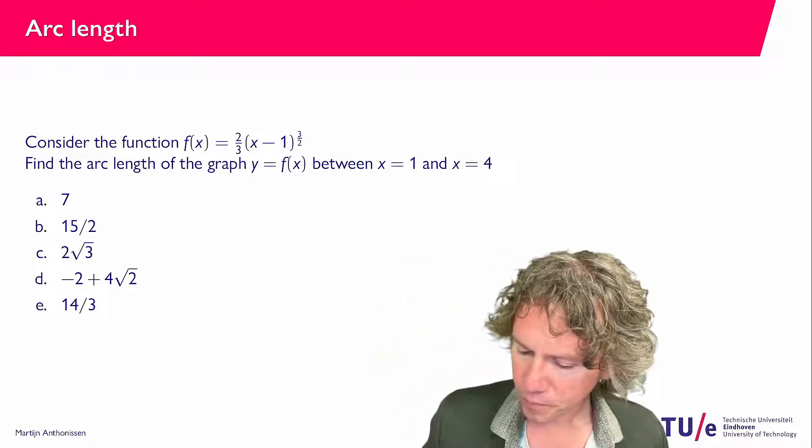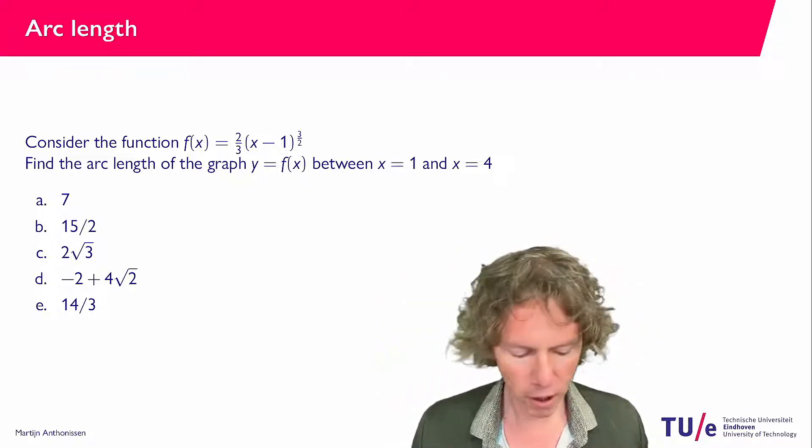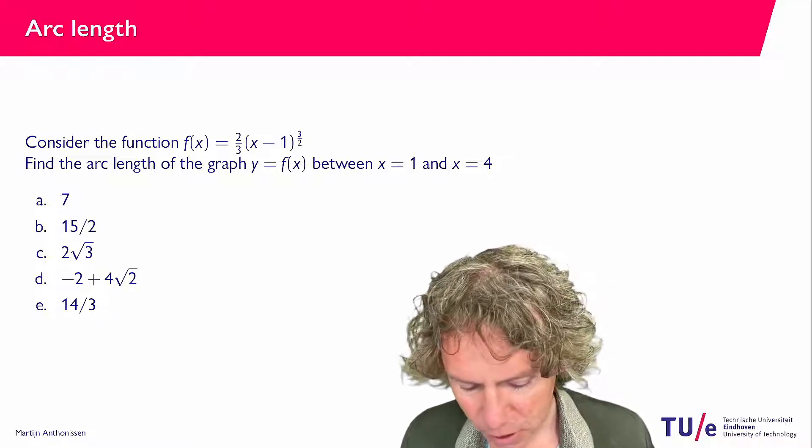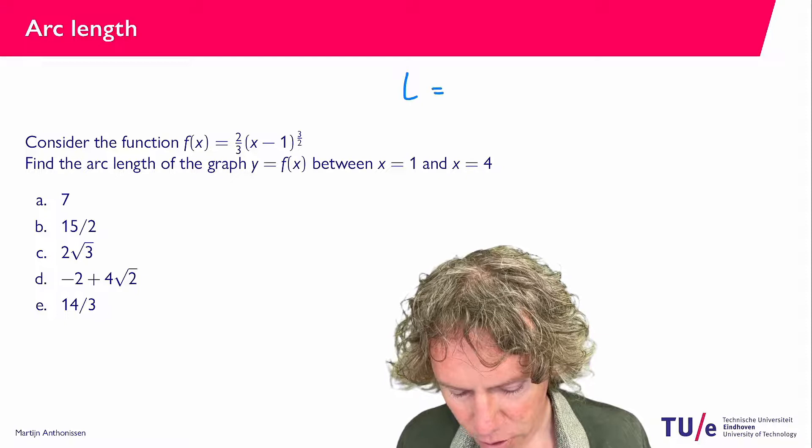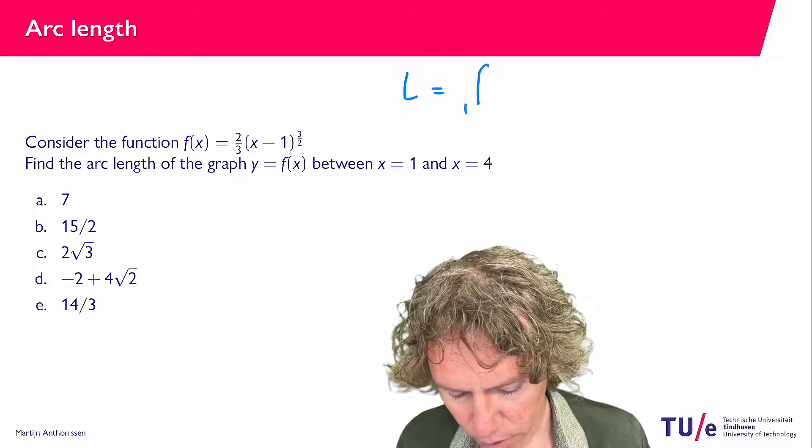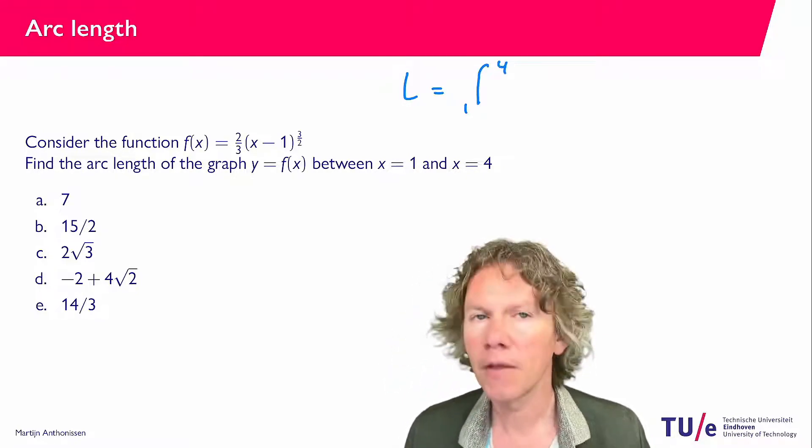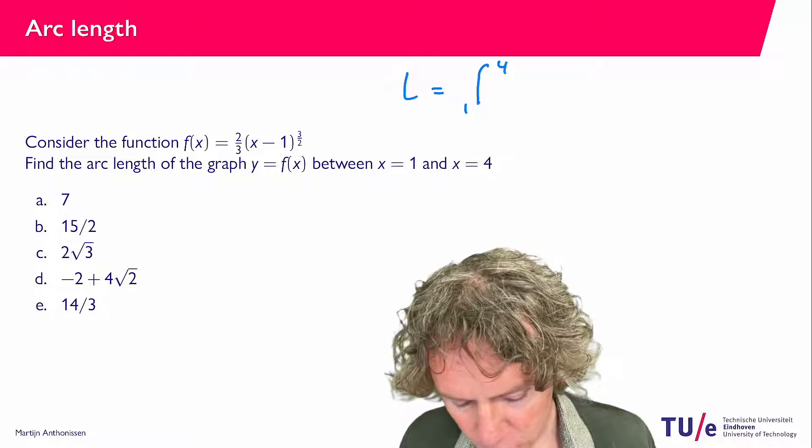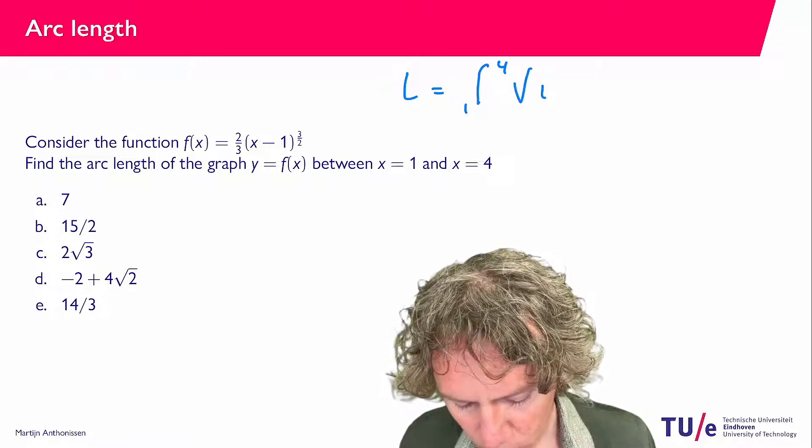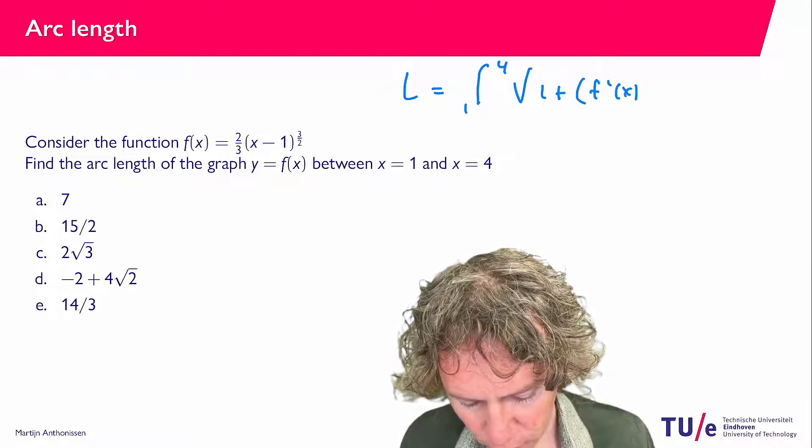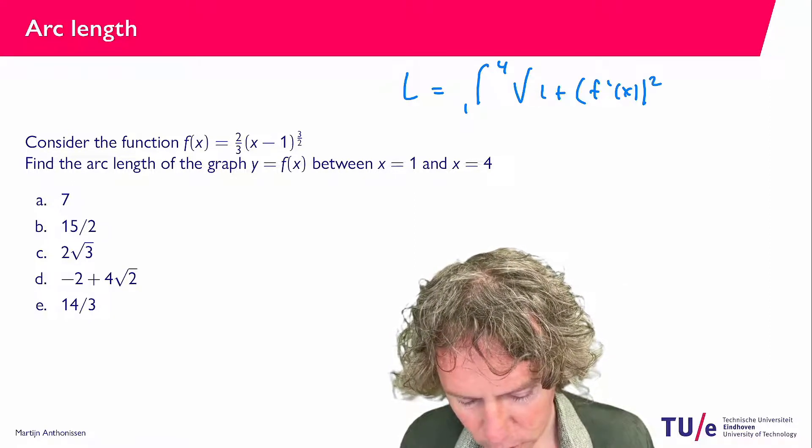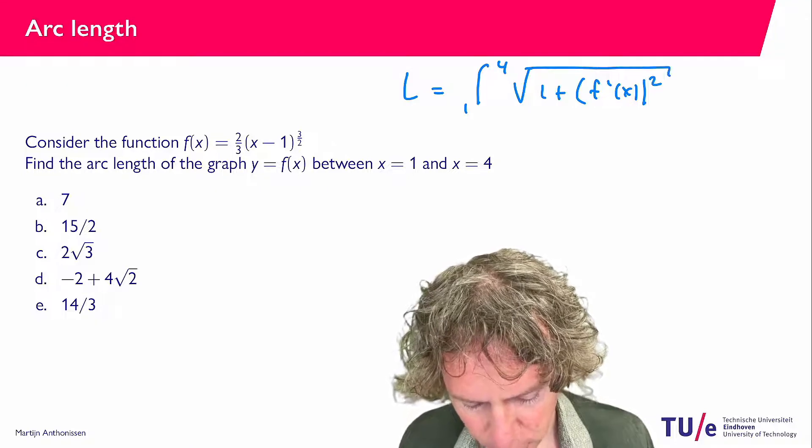So let's see, the general formula that we need to use is that this arc length, let's call that capital L, is the integral from 1 to 4, and then the function we need to integrate is the square root of 1 plus f prime x, so the first derivative squared, dx.